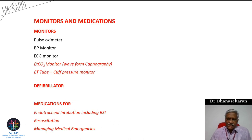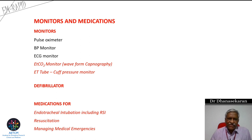Monitors include pulse oximeter, BP monitor, and ECG monitor — all should be continuous. The most important one: do not compromise on ETCO2 monitoring. A waveform capnography is most ideal. In the pediatric age group, there should be constant checking of cuff pressure using a cuff pressure manometer.